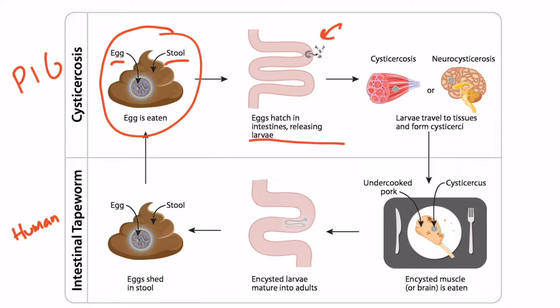The larvae will then travel to the pig's muscle or brain. Upon reaching the destination, the larvae will form a cysticercus, basically just a cyst surrounding the larvae. So if it's in the muscle, we call that cysticercosis, and if it ever enters the brain, that's called neurocysticercosis. Now pork meat may contain cysticerci, so this is one of the reasons you want to be sure to thoroughly cook your pork meat before eating it.